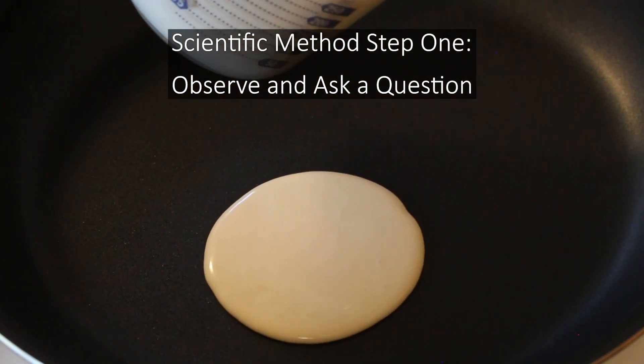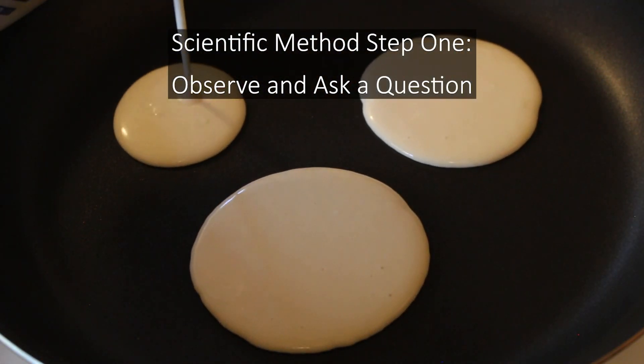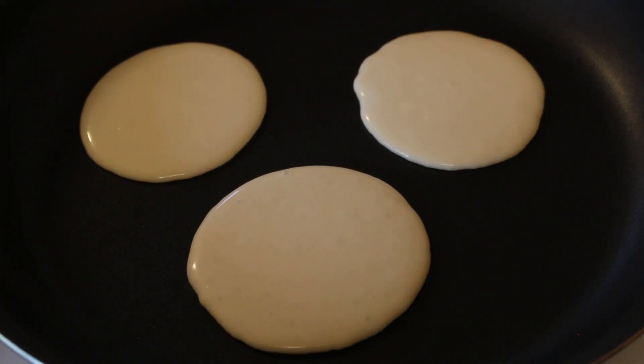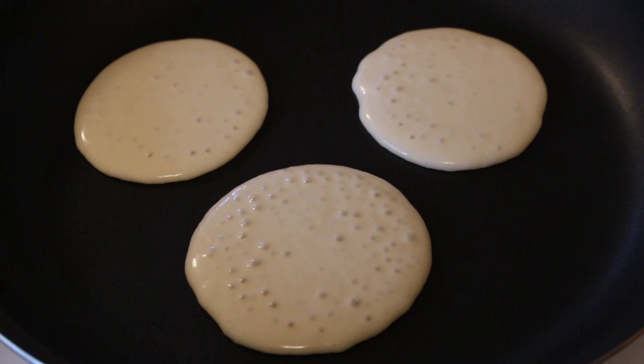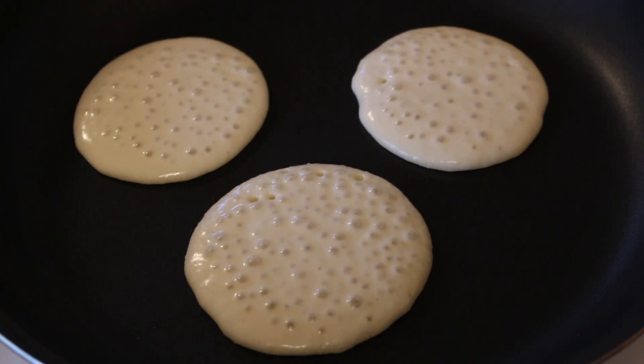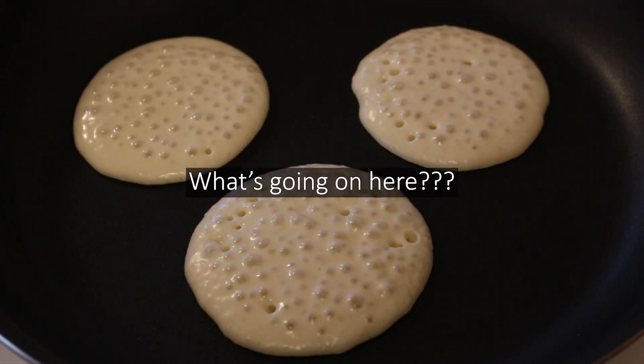Step one is to make an observation about a phenomenon, or whatever it is you're interested in, and ask a question about its nature. For example, let's say you're making pancakes and you notice bubbles form on them after they've been cooking a while, so you might wonder what's causing the bubbles to form.